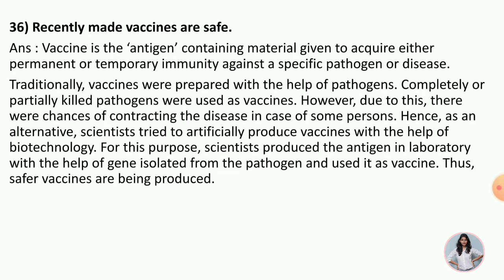However, due to this traditional method, there were chances of contracting the disease in some persons — meaning the disease was caused by the vaccine itself. Hence, as an alternative, scientists tried to artificially produce vaccines with the help of biotechnology. Scientists produced antigens in the laboratory with the help of genes isolated from the pathogen.